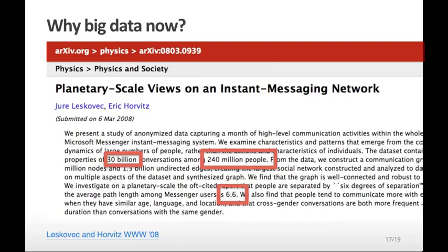So why are we talking about big data now? Well, this is a study that was done in 2008, where they studied instant messaging data. They studied 30 billion conversations on 240 million people and came up with a new number for 6.6 degrees of separation between individuals, which they rounded up to 7 degrees of separation. Big data is such a hot topic because it's now so easy to collect so much data for so little money. And it's not clear that our computers have kept up with the pace of data collection.